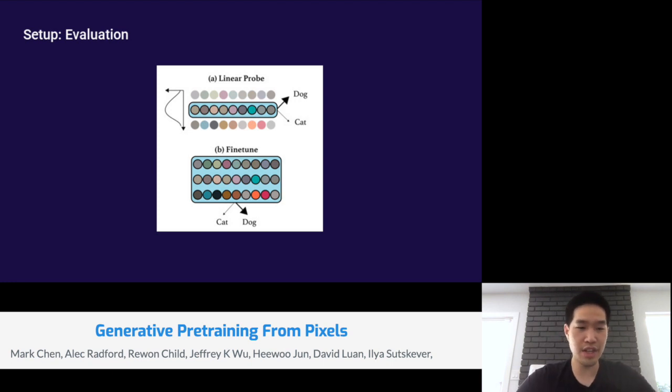The way we set up fine tuning is pretty similar to the way that we do linear probing. We take the output after all the transformer blocks, then we do a layer norm, we average pool over context, and then we have a linear layer that produces class logits.